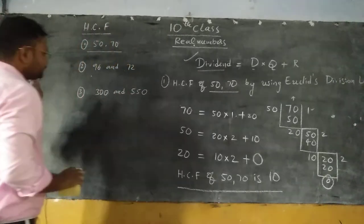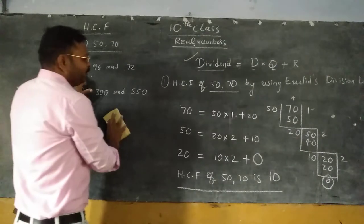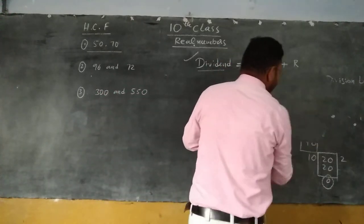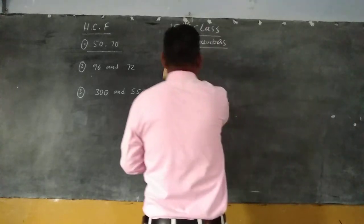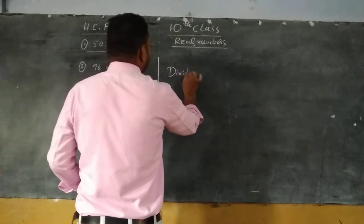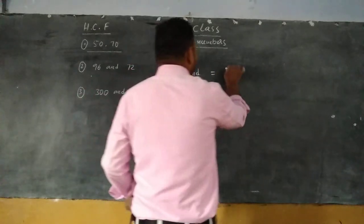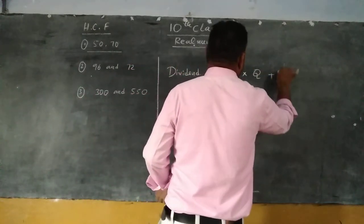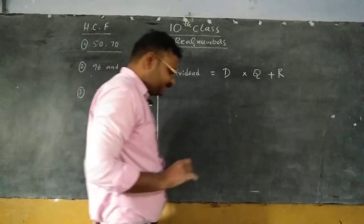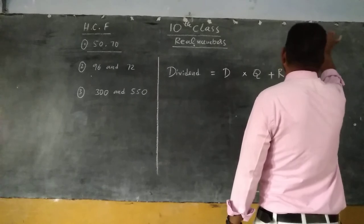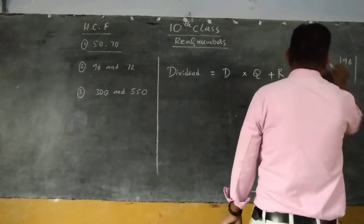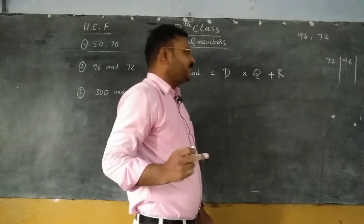Did you understand this? Very good. One more problem: second problem — find the HCF of 96 and 72. Here dividend equals divisor into quotient plus remainder — this rule is called Euclid's division lemma. Now take the two numbers again. What is the bigger number in 96 and 72? The bigger number is 96. Take 72, that is the smaller number. Do the division with the 72 table.